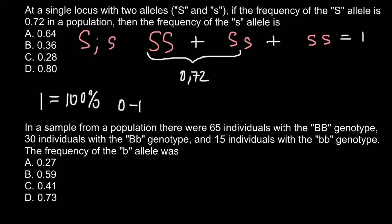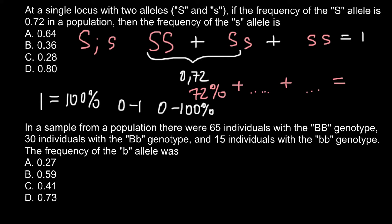We work on a scale between 0 and 1, or alternatively between 0 and 100%. So for example, 0.72, if we need to give the answer in percentage form, we just multiply by 100, which equals 72%. So we have 72% here, plus something here, plus something here — this should equal 100%.